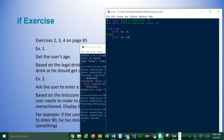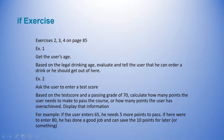That's number four. Any questions? Let's look at this exercise: get the user's age based on the legal drinking age — evaluate and tell the user whether they can order a drink or should get out. I'll give you five minutes to do this.